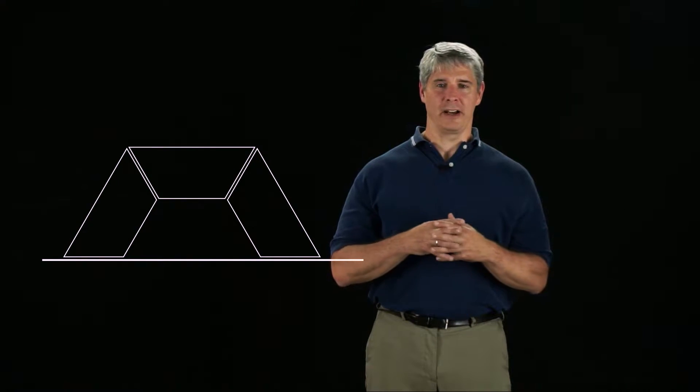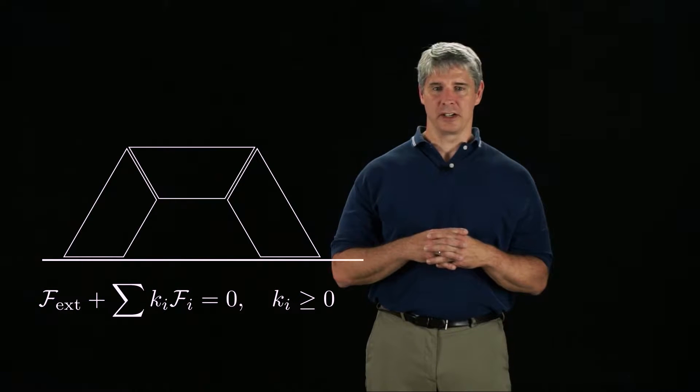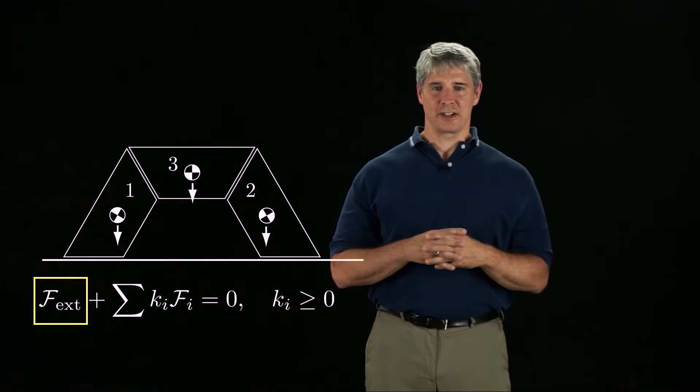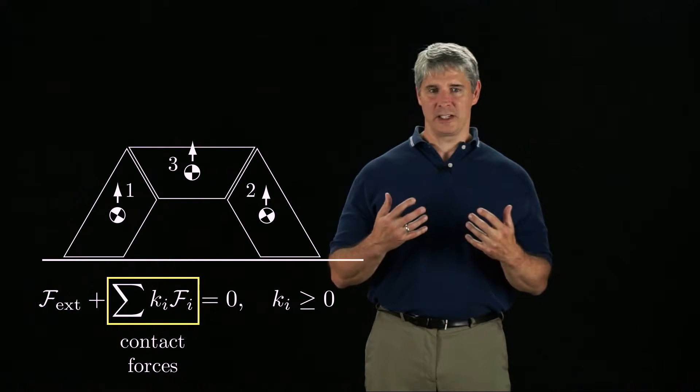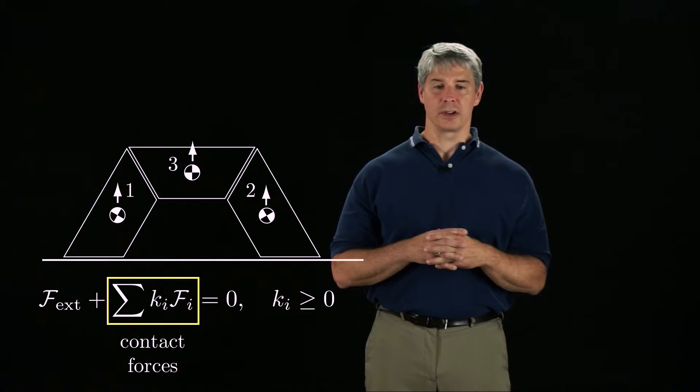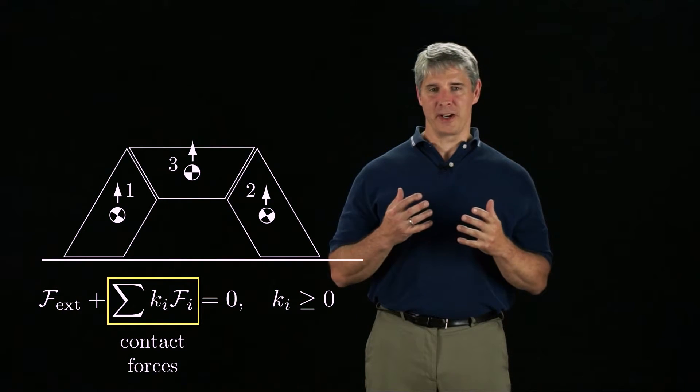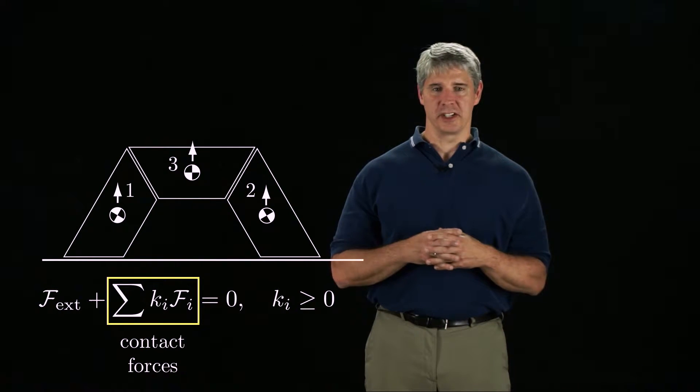for each block we can write a vector static balance equation, where fx is the external force acting on the block, in this case gravity, and the contact wrenches on each block must balance the gravitational force. The fi are the wrenches corresponding to friction cone edges, and the ki are non-negative coefficients.